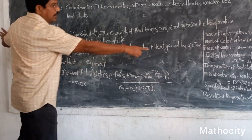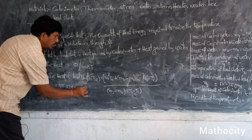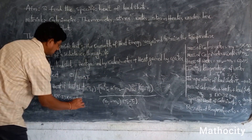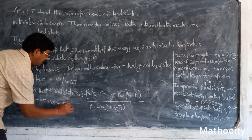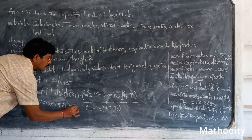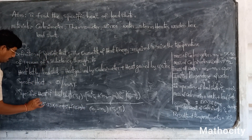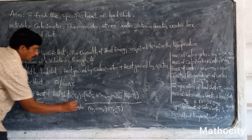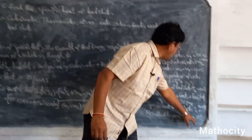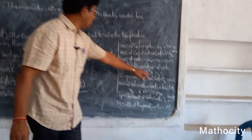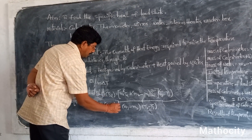Into specific heat of the calorimeter, 0.095. Plus M2 minus M1 — M2 minus M1 is 68.05 — into specific heat of water, which is 1. Next, T3 minus T1: T3 is 35 degrees centigrade and T1 is equal to 24 degrees. So 35 minus 24 equals 11 degrees.